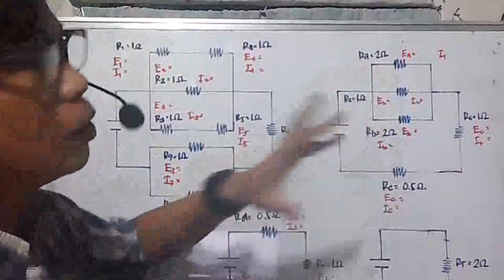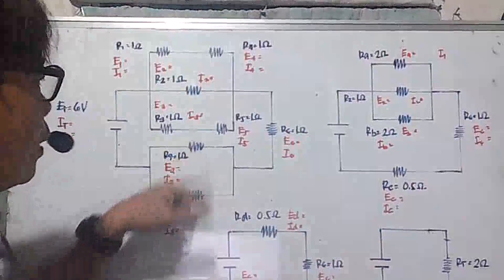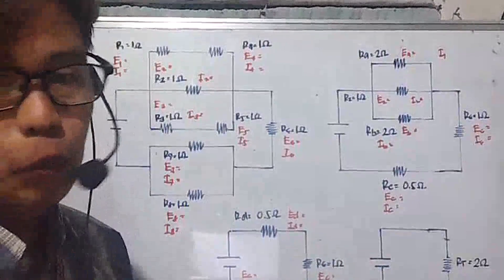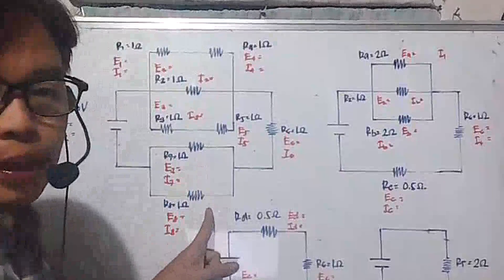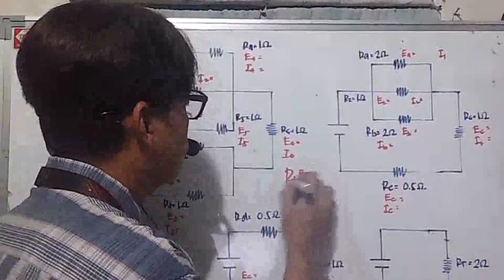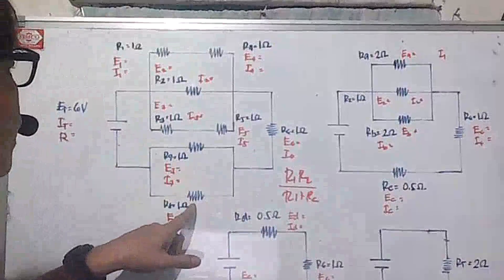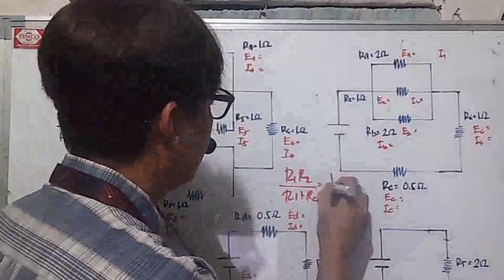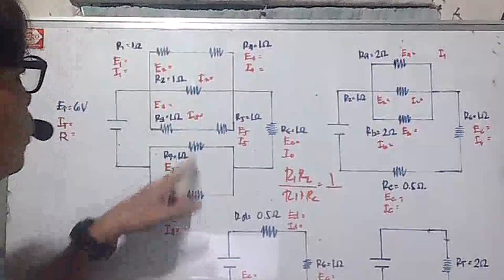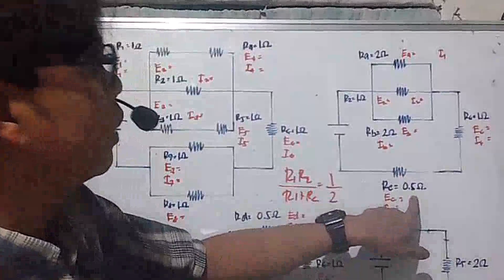Since they are in series, in series circuit resistances are added. So we have one ohm and one ohm, one ohm and one ohm. We have Ra equal to two ohms, and Rb also equal to two ohms. Now we could still combine R7 and R8. The formula for solving two resistors in parallel is R1 times R2 divided by R1 plus R2. So it is 1 times 1 divided by 1 plus 1, which equals one-half or 0.5 ohms.